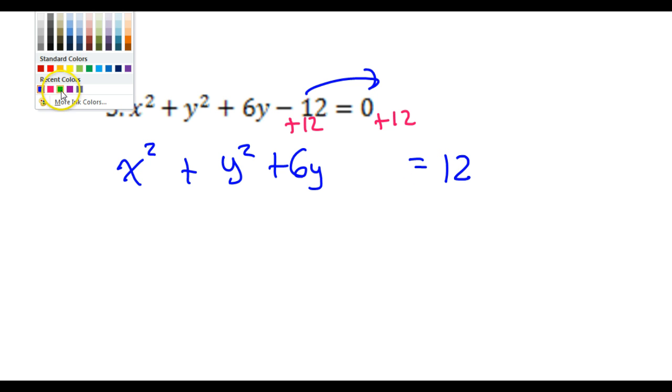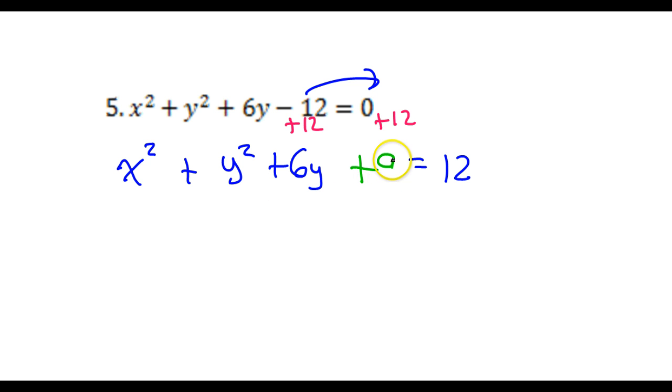So that will give me 12 over there. So it is time to complete the square with the y's. Just the y's. Half the middle is 3. 3 squared is 9. So we're going to add 9 to both sides.